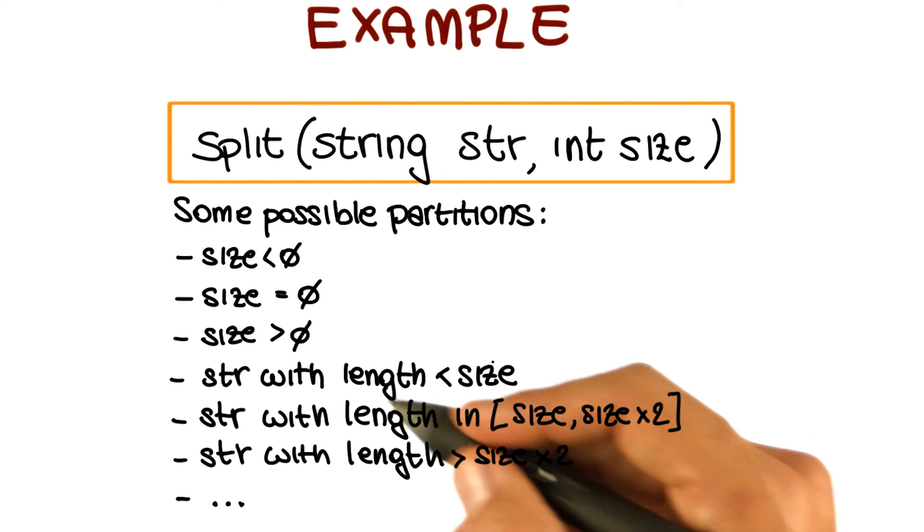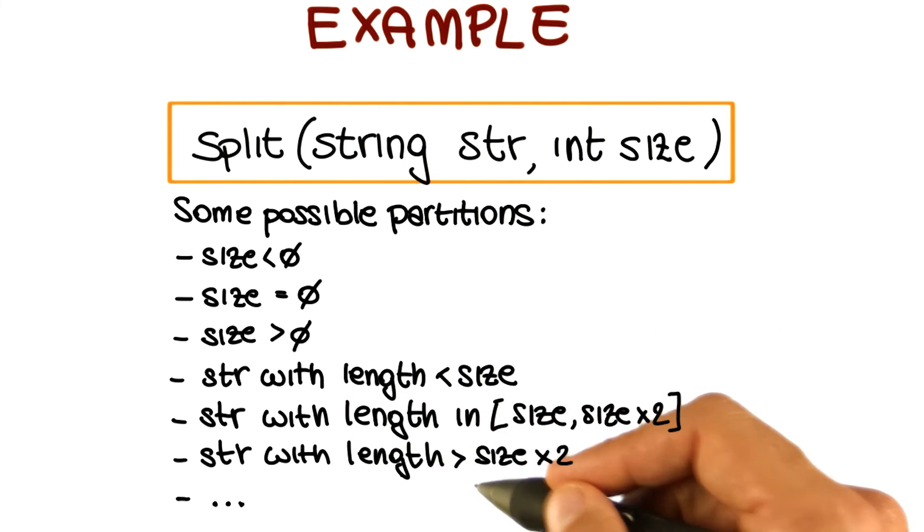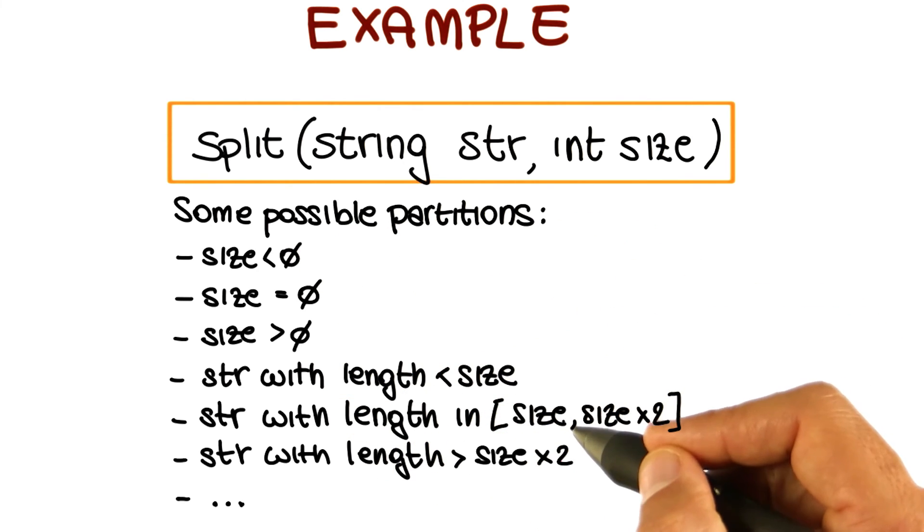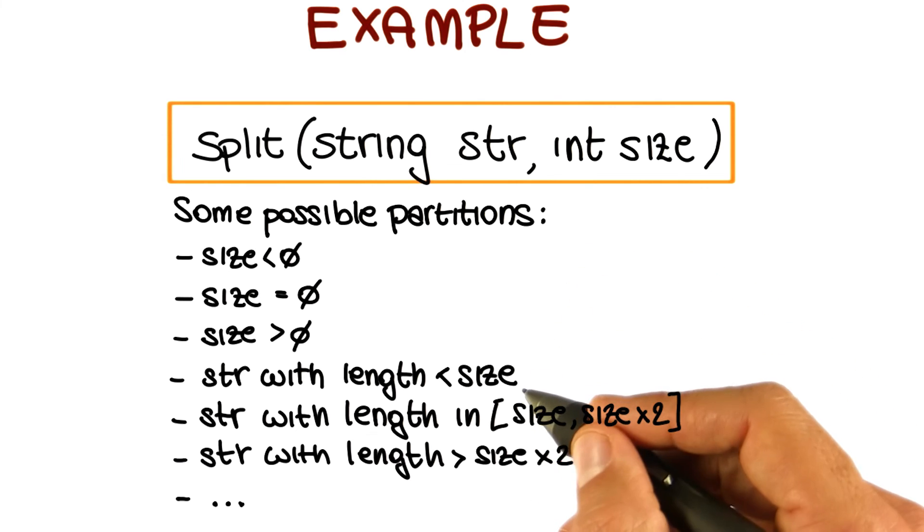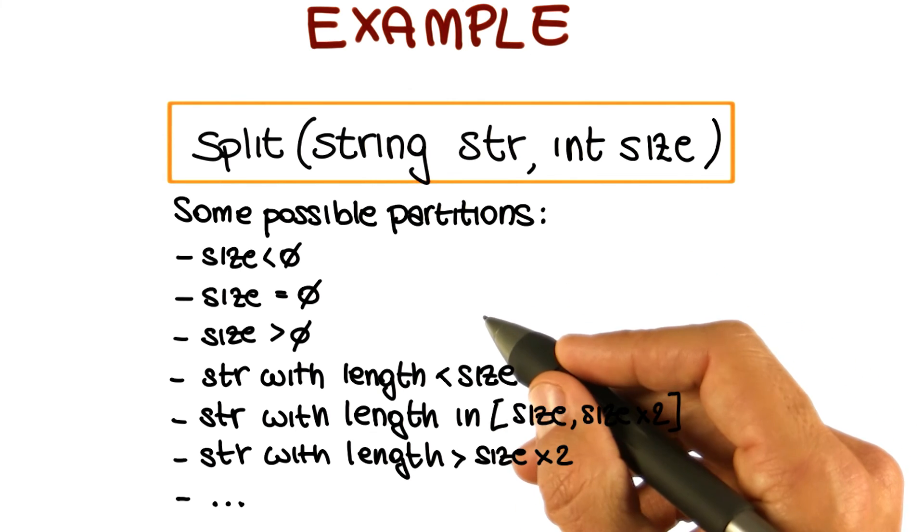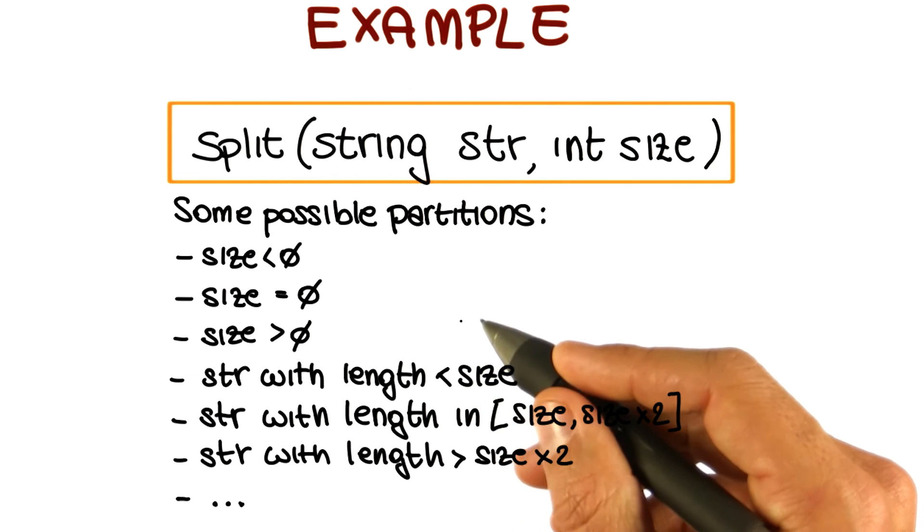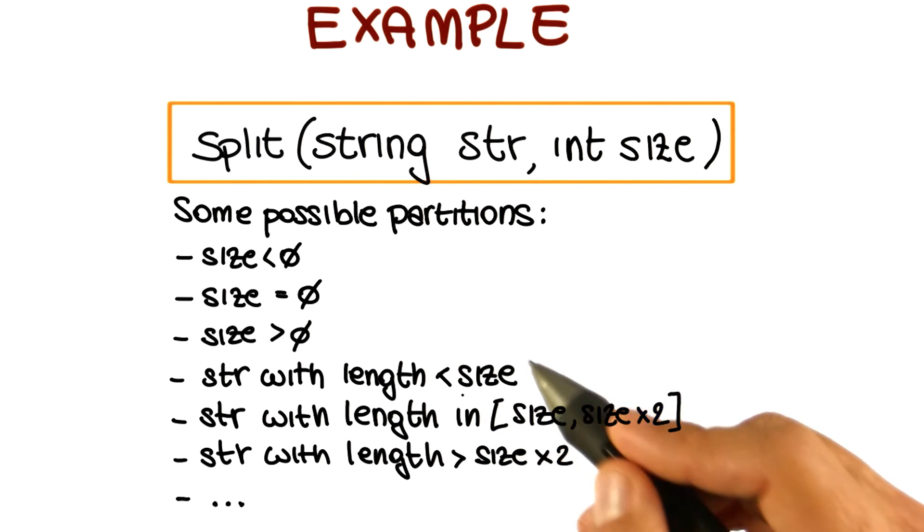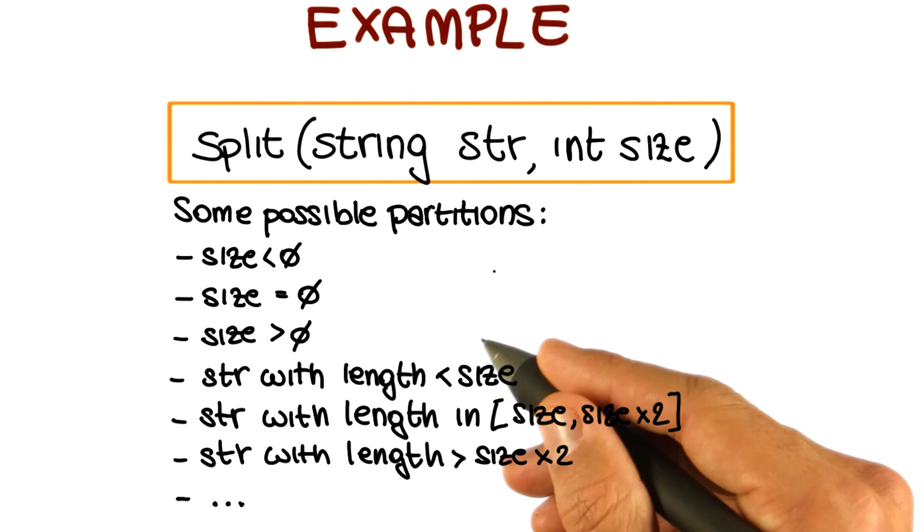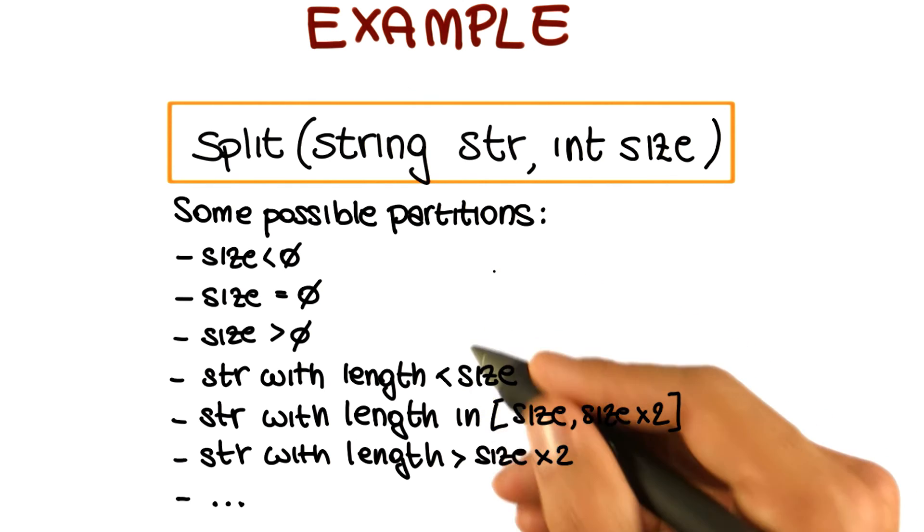So at this point, we said that there were two steps. One was to identify the subdomains, and the second one was to pick values in these subdomains, the values that we actually used for the testing. In this case, we do not want to just pick any value. Rather, we want to pick values that are particularly interesting, particularly representative. So what does that mean? Well, we're going to do that based on an intuitive idea.